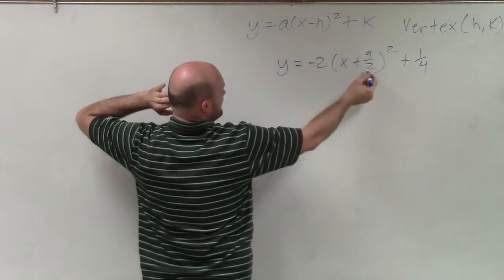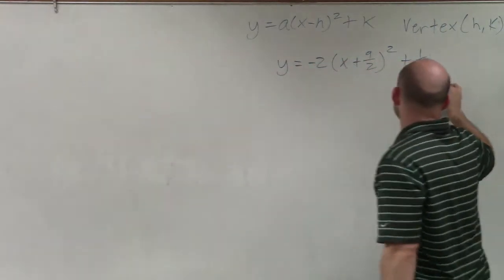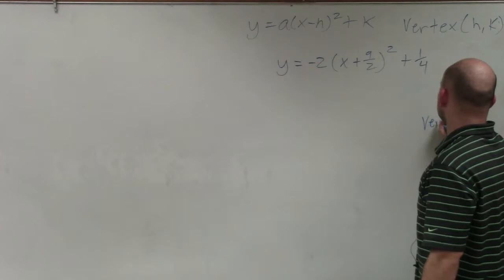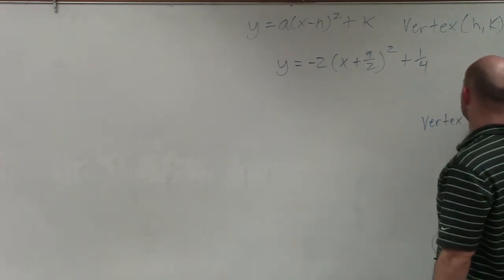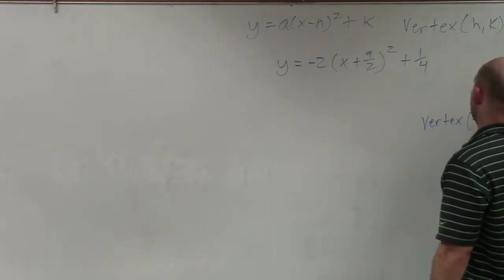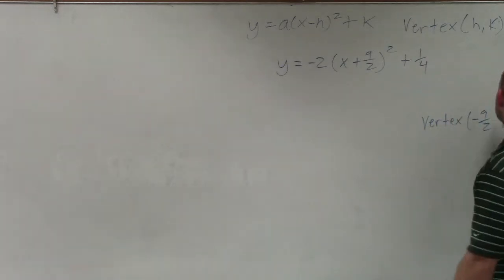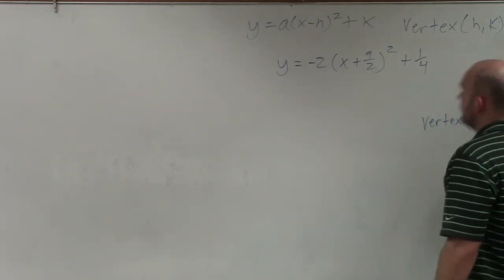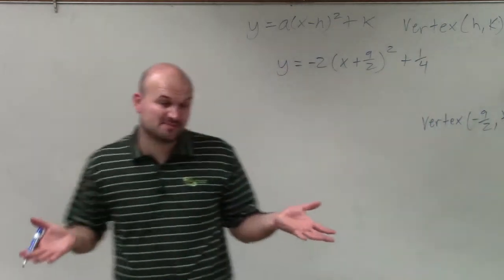So therefore, I need to take the opposite of 9 halves. So in this case, my vertex, let me write it down here. So here, my vertex is going to be negative 9 halves, that's the opposite of 9 halves, and then comma 1 fourth. All right, so that's my vertex. Very simple, not as much math to do.